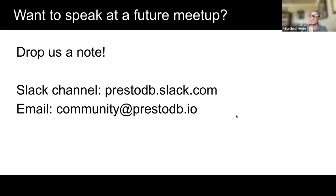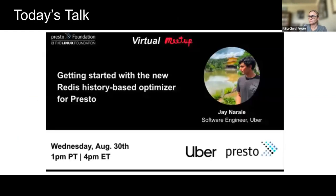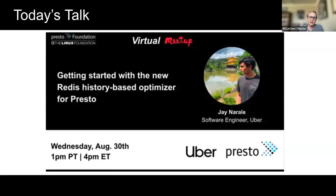If you want to speak at a future meetup, just email us or join the Slack channel. Without further ado, we are here for the main event. Please welcome Jay Narale from Uber. He has put a lot of work into this Redis history-based optimizer for Presto. We love these to be interactive, so if you have a question, feel free to pop it into the chat or go off mute and ask. It makes it a little bit more of a lively, two-way conversation.